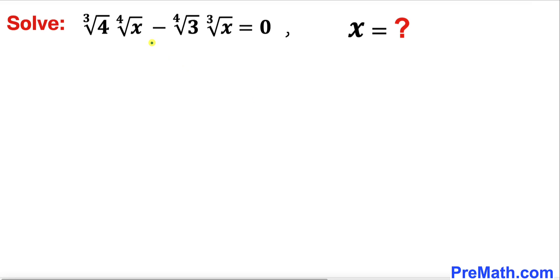Welcome to pre-math. In this video we are going to solve this given radical equation: cube root of 4 times the 4th root of x, minus the 4th root of 3 times the cube root of x, equals zero.